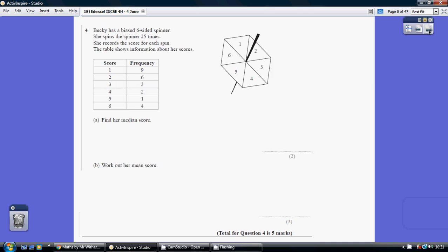Question 4. Her median score, that's the middle score. Well, she spun the spinner 25 times, so the middle spin is the 13th spin.